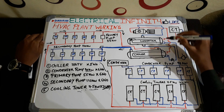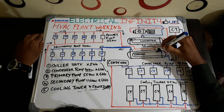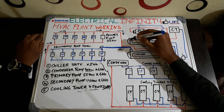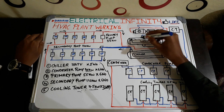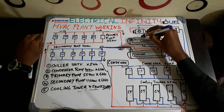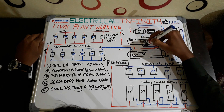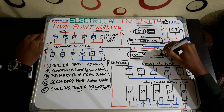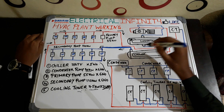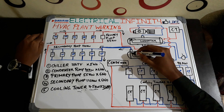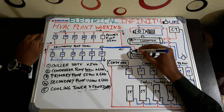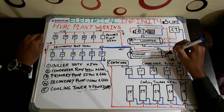Coming to the chiller — the refrigerant which was present in the shell type in the condenser is now present in the tube type of the chiller. The refrigerant is transferred from the condenser through the expansion valve to the tube type of the chiller. The water used for cooling the entire building is present in the shell type of the chiller.